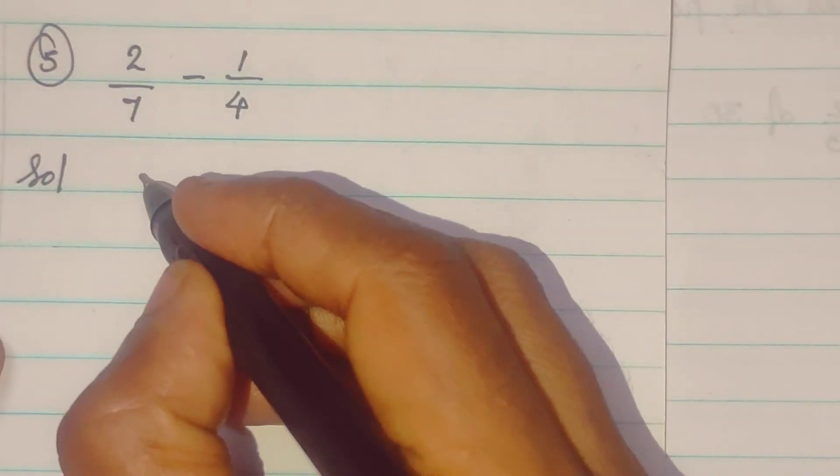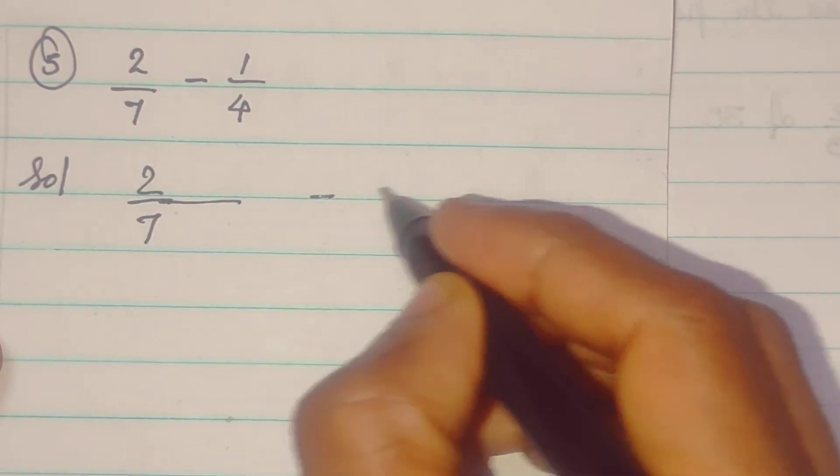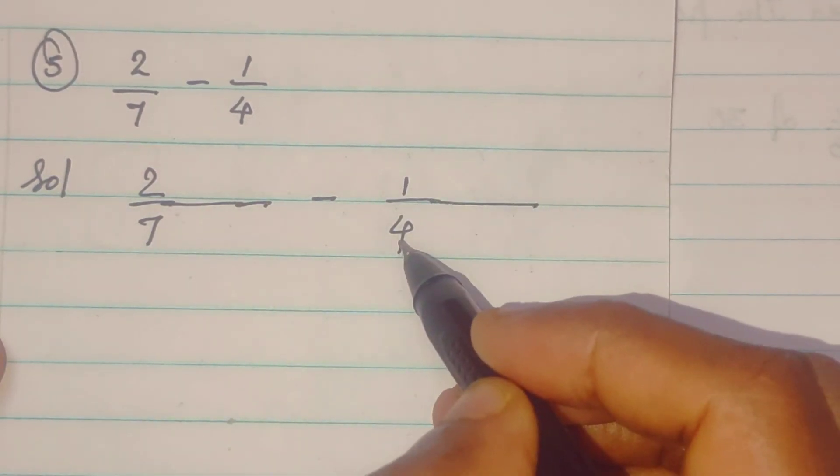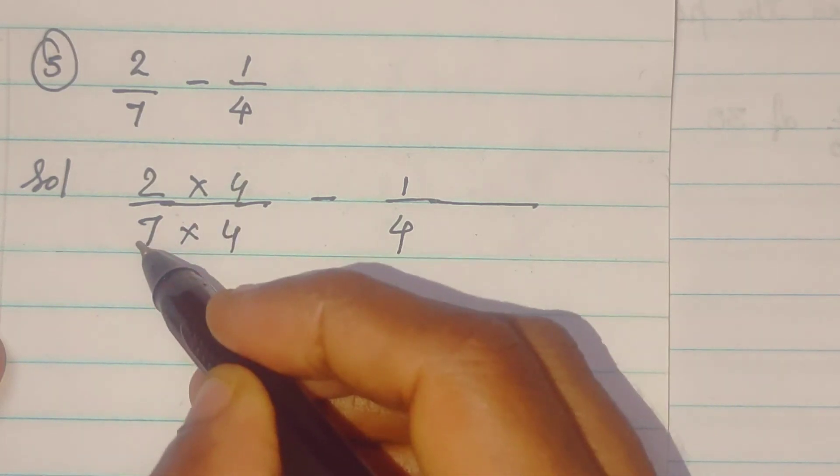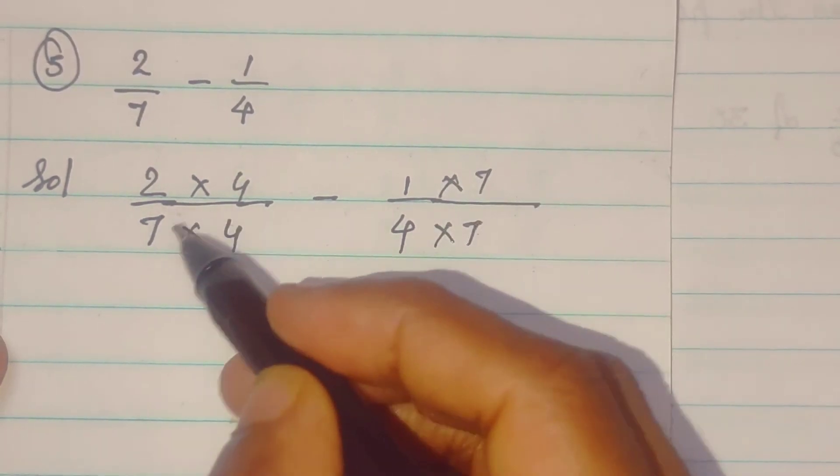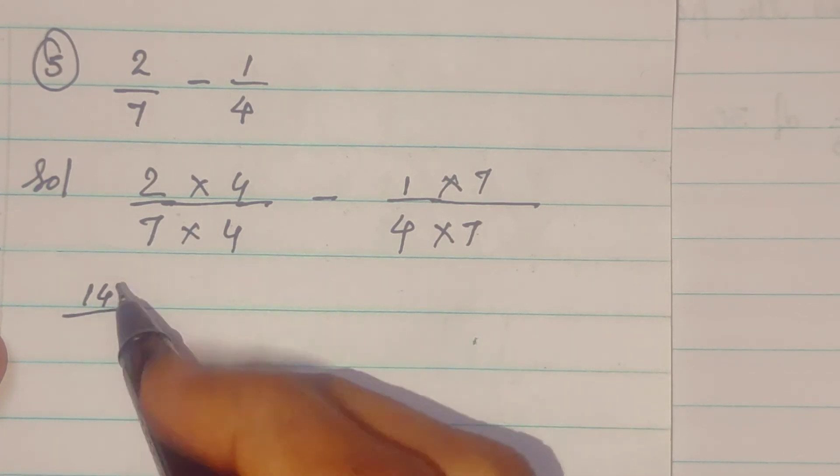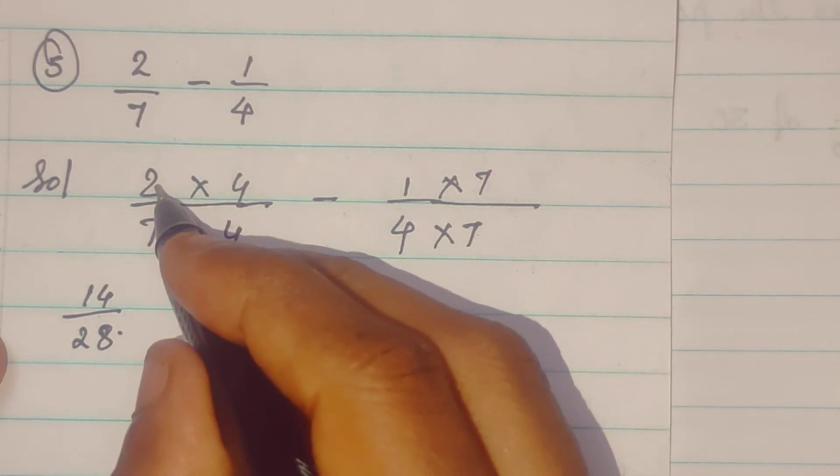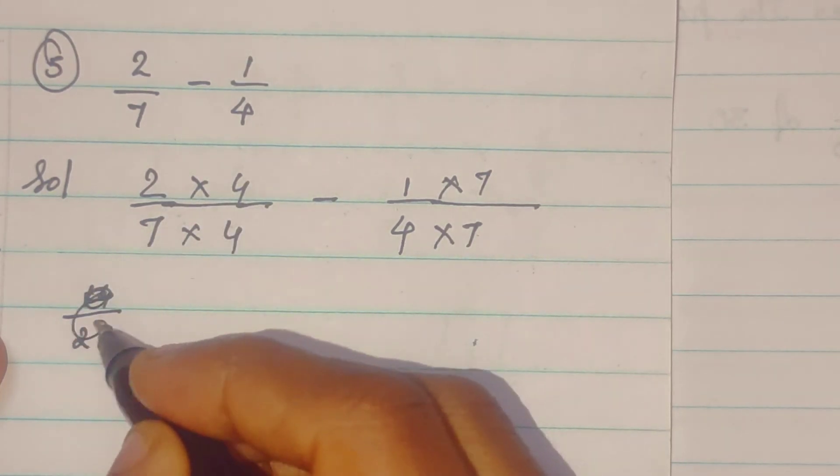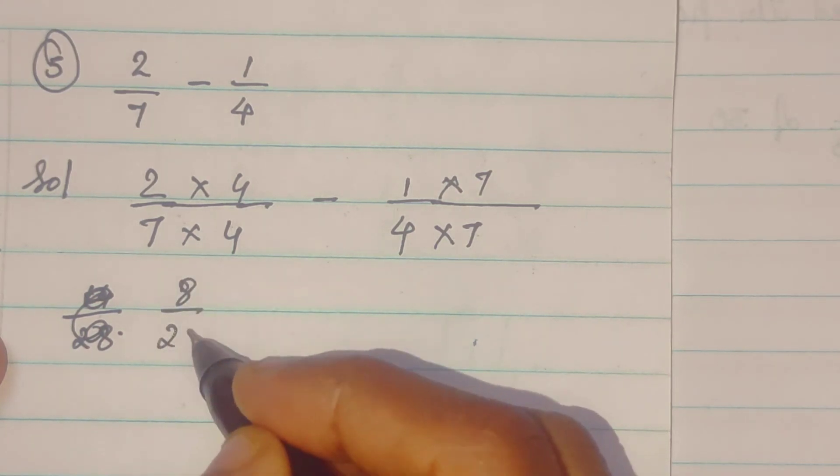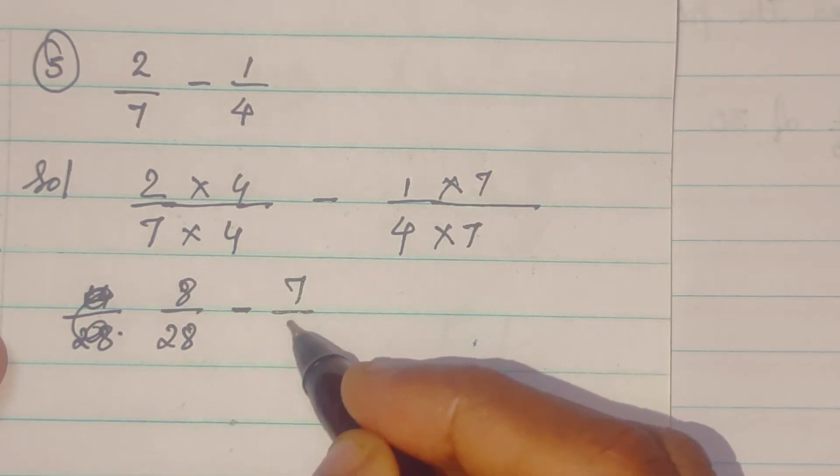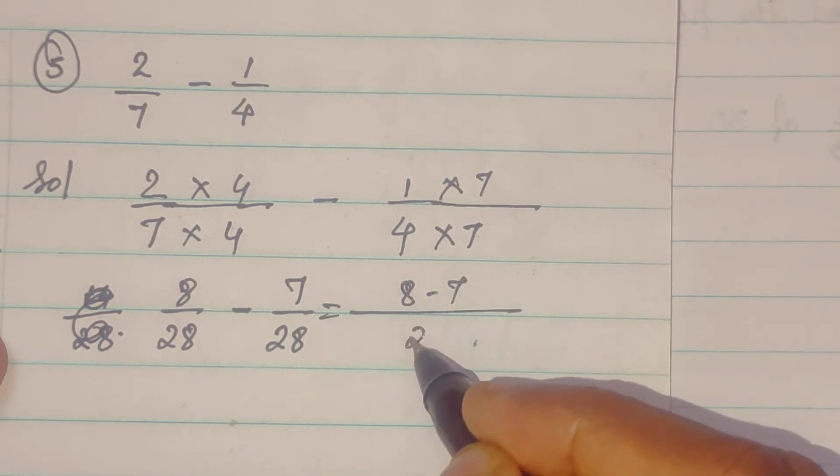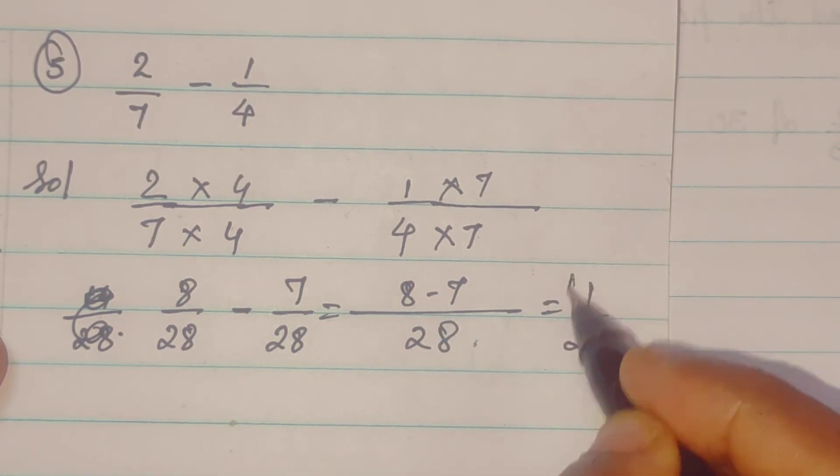Fifth sums, again similarly, 2 upon 7 minus 1 upon 4. So, again they are different. So, what we will do? This 4 we will multiply here and this 7 we will multiply here. So, 2 7s are 14. 7 4s are 28. Sorry. 2 4s are 8. 2 4s are 8. 7 4s are 28 minus 1 7s are 7. 4 7s are 28. So, that will be 8 minus 7 upon 28. So, 1 upon 28.